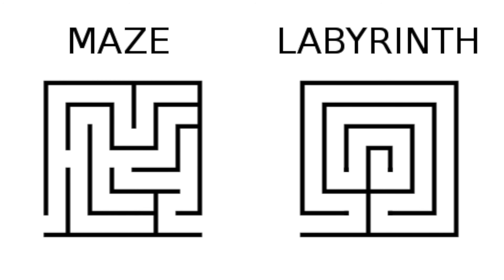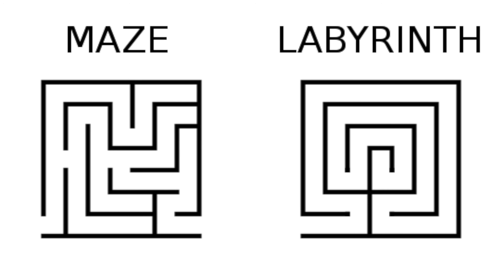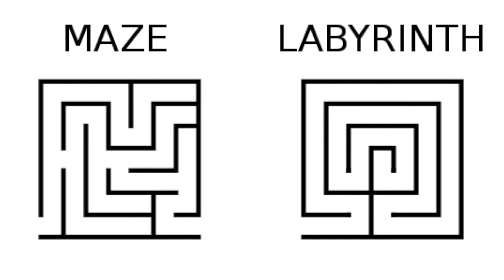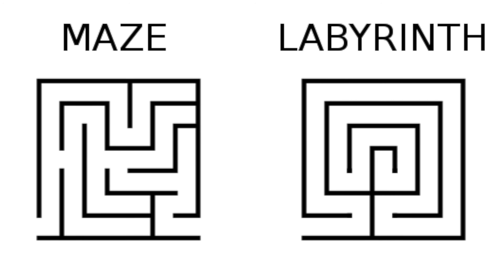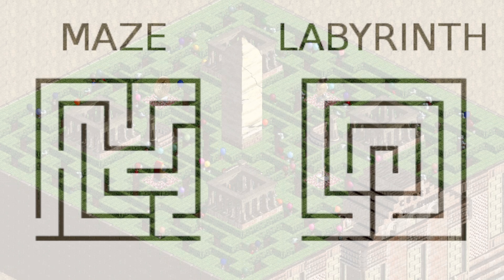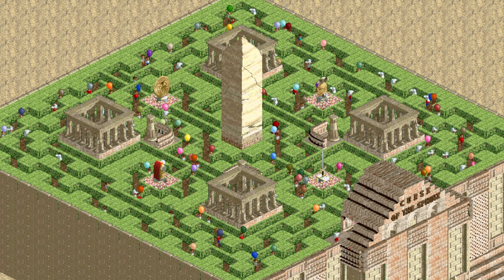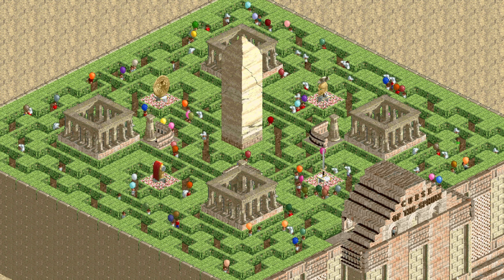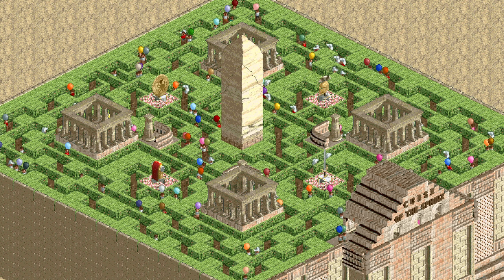On the other hand, a labyrinth is generally considered to be a continuous path. It's non-branching, there's no dead ends or anything like that, it's a singular path from start to finish, so guests merely need to follow the path and eventually they will reach the exit.